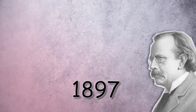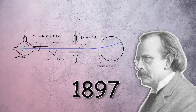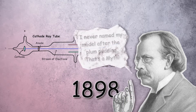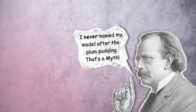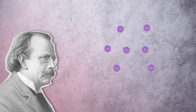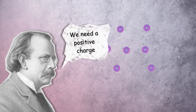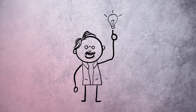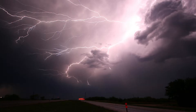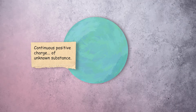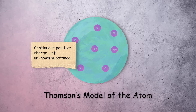In 1897 Joseph Thomson discovered the electron, and the following year he proposed a new model of the atom. Thomson understood atoms contained negatively charged electrons, but atoms were also electrically neutral, so there had to be some positive charge that acted as a counterbalance. His model consisted of a sphere of continuous positive charge with electrons embedded within.